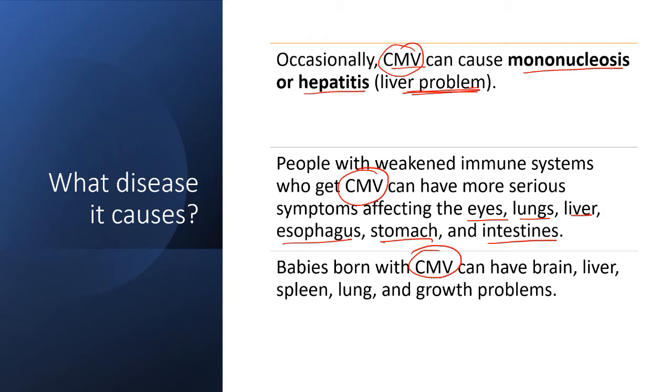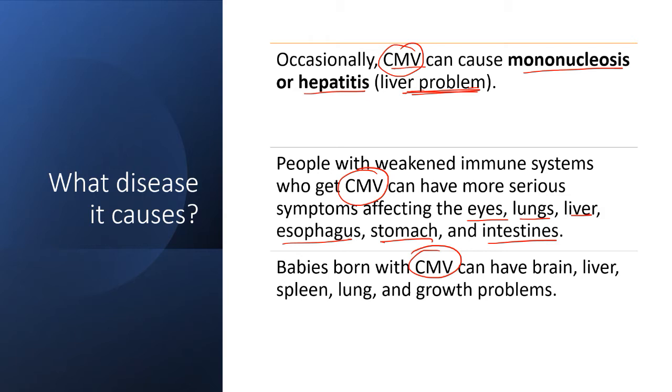Babies born with cytomegalovirus can have brain, liver, spleen, lung, and growth problems.